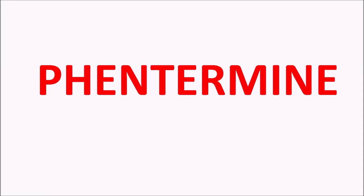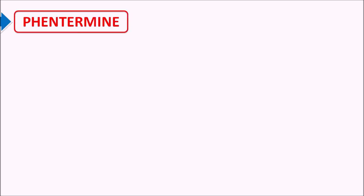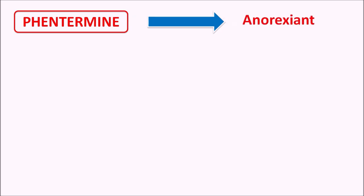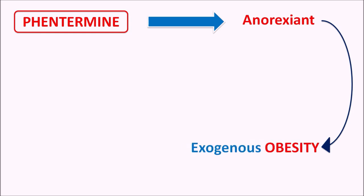Today we are going to discuss Phentermine. This drug is classified as an anorexiant — a category of drugs that reduce appetite. That's why Phentermine is used in the treatment of exogenous obesity, which is obesity due to the excessive intake of food, where the enhanced appetite can be controlled. This drug is actually sympathomimetic, meaning it increases sympathetic activity.